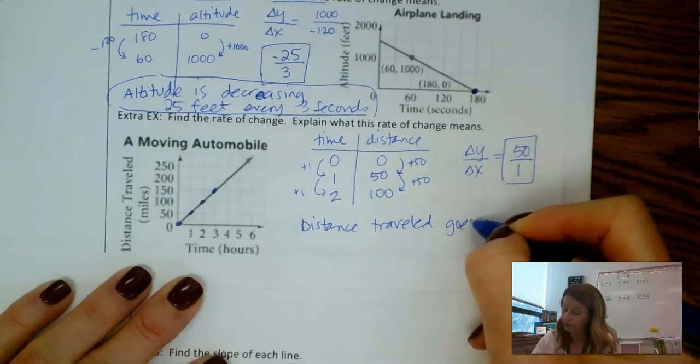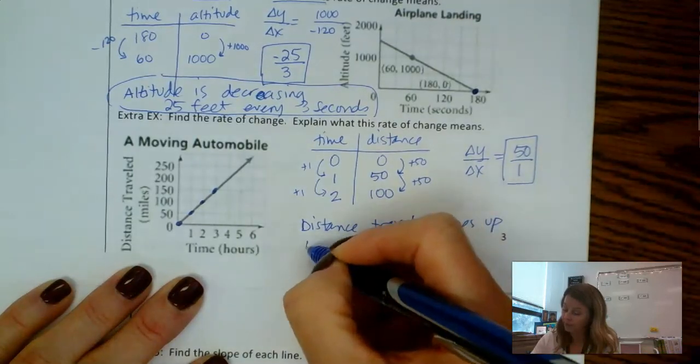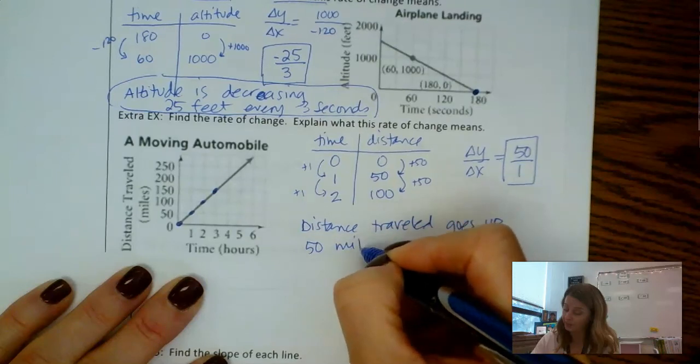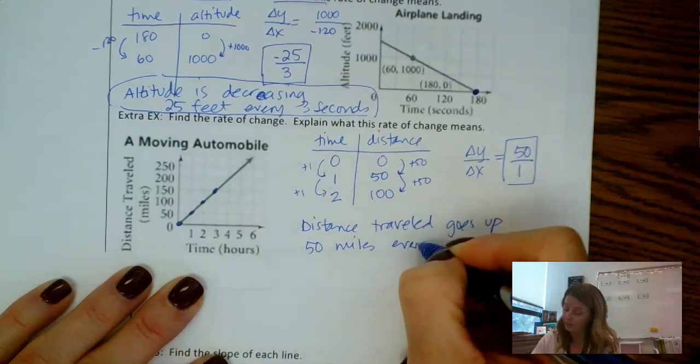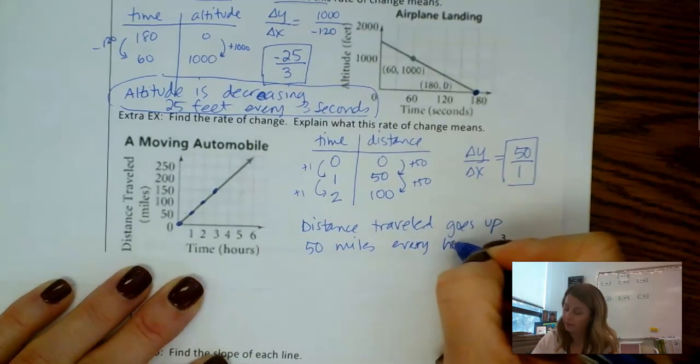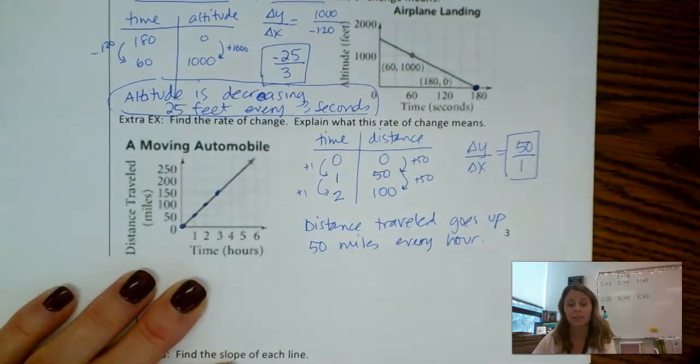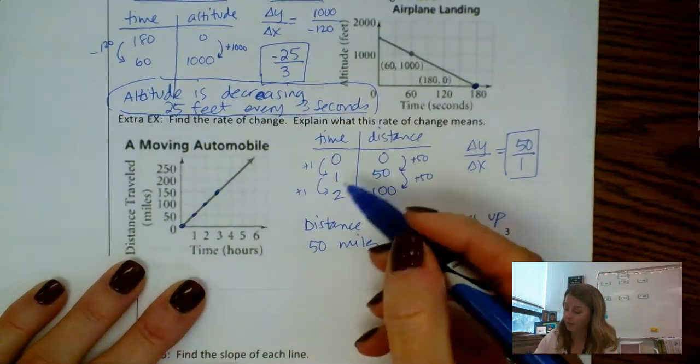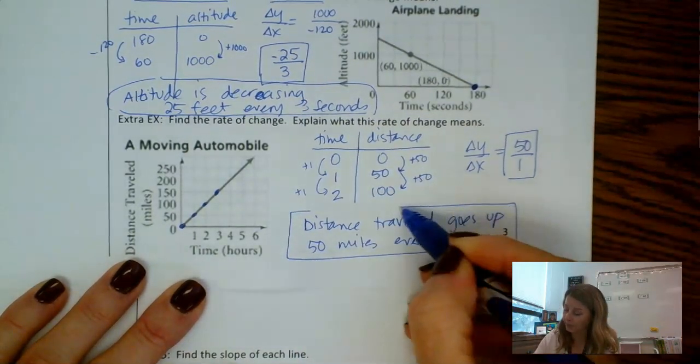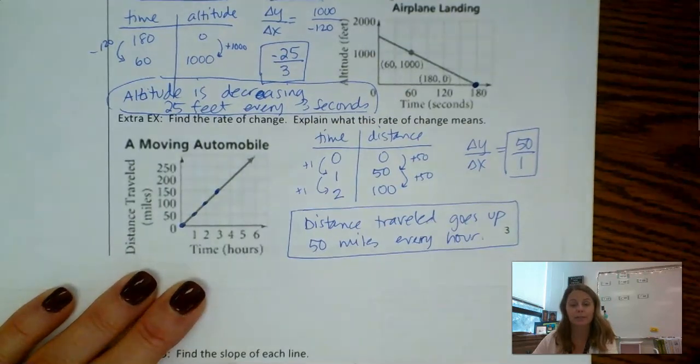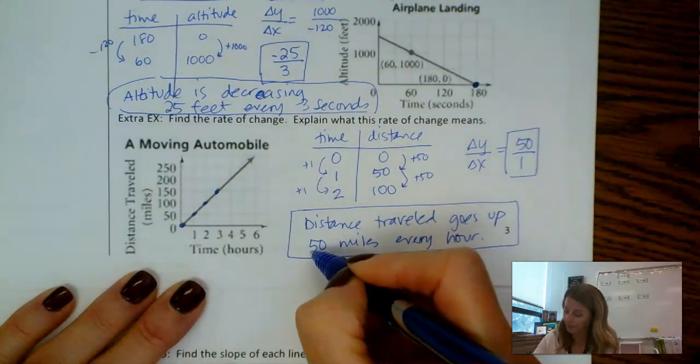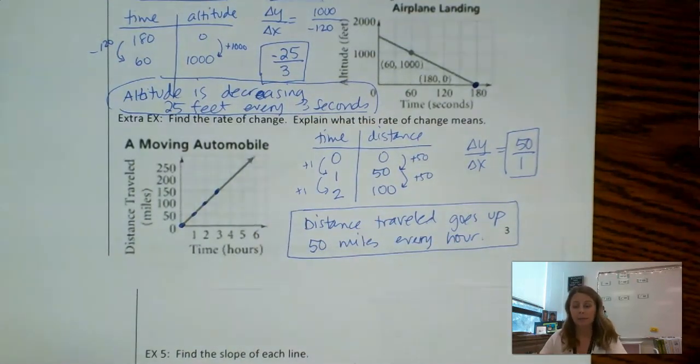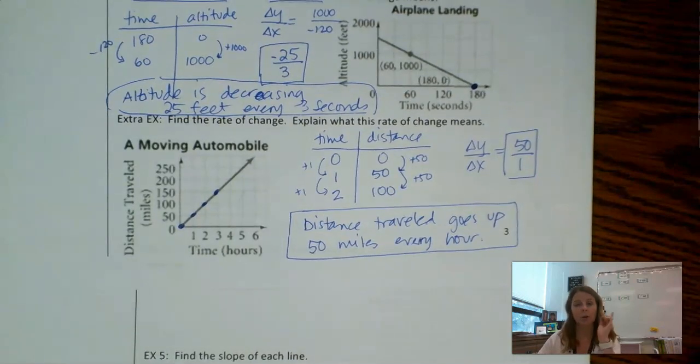Distance traveled, let's say goes up 50 miles every hour. Or I guess you could say the car is traveling 50 miles every hour. I'm not sure going up makes sense with distance but increasing 50 miles every hour. Okay, I'm going to stop this video and then if you would go on to the next video to work those last examples out on the next page.